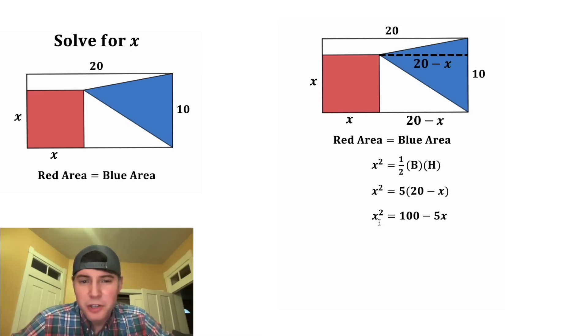Now we have an x squared term and an x term. That means we want to set this whole thing equal to zero. We can subtract x squared from both sides. This x squared and this negative x squared will cancel each other out. And that leaves us zero on this side. And on the right-hand side, we end up with negative x squared plus 100 minus 5x.